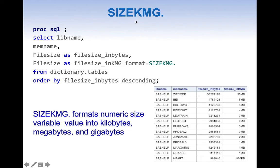Now let us look into format equals SIZEKMG. SIZEKMG formats numeric size variable values into kilobytes, megabytes and gigabytes. Let us try to understand through a query what exactly SIZEKMG does. Here we have a query select libname, memname, filesize as filesize_inbytes, filesize as filesize_inKMG where we are formatting this filesize using format equals SIZEKMG from dictionary.tables order by filesize_inbytes descending.